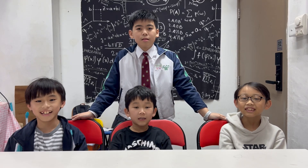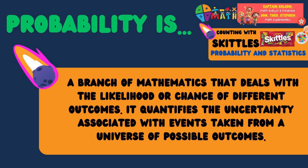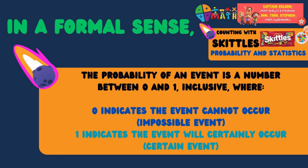What is Probability? Probability defines a branch of mathematics that deals with the likelihood or chance of different outcomes. It quantifies the uncertainty associated with events taken from a universe of possible outcomes. The probability of an event is a number between 0 and 1, where 0 indicates the event cannot occur — an impossible event.